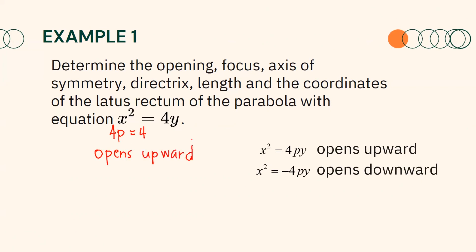Since 4p equals 4, the length of the latus rectum is equal to 4 units. Likewise, since 4p equals 4, it follows that p equals 1. Hence, the focus and the directrix are 1 unit away from the vertex.